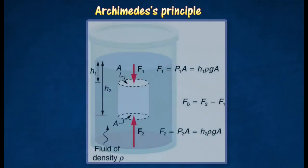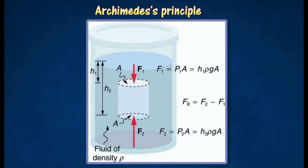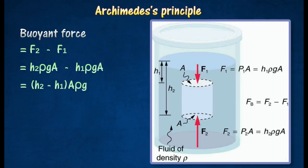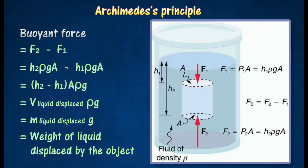Consider a cylindrical block submerged in a liquid of density rho. The difference between the forces acting on the upper surface and the lower surface is the net force acting upwards and known as buoyant force. Buoyant force is equal to the resultant force acting upwards as shown in the following equation. Hence, buoyant force is equal to the weight of liquid displaced by the object.